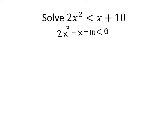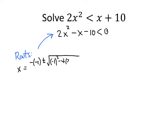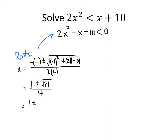Maybe this factors, but with a 2 in front of x squared it's difficult, so let's use the quadratic formula. Let's temporarily find the roots — when the polynomial equals 0. The roots will help us. So x equals negative b, which is negative of negative 1, plus or minus the square root of b squared minus 4ac — that's negative 1 squared minus 4 times 2 times negative 10 — all divided by 2a, which is 4. That gives us 1 plus or minus the square root of 81, all over 4, which is 1 plus or minus 9 over 4. So the roots are 10 over 4, or 5 over 2, and negative 8 over 4, or negative 2.